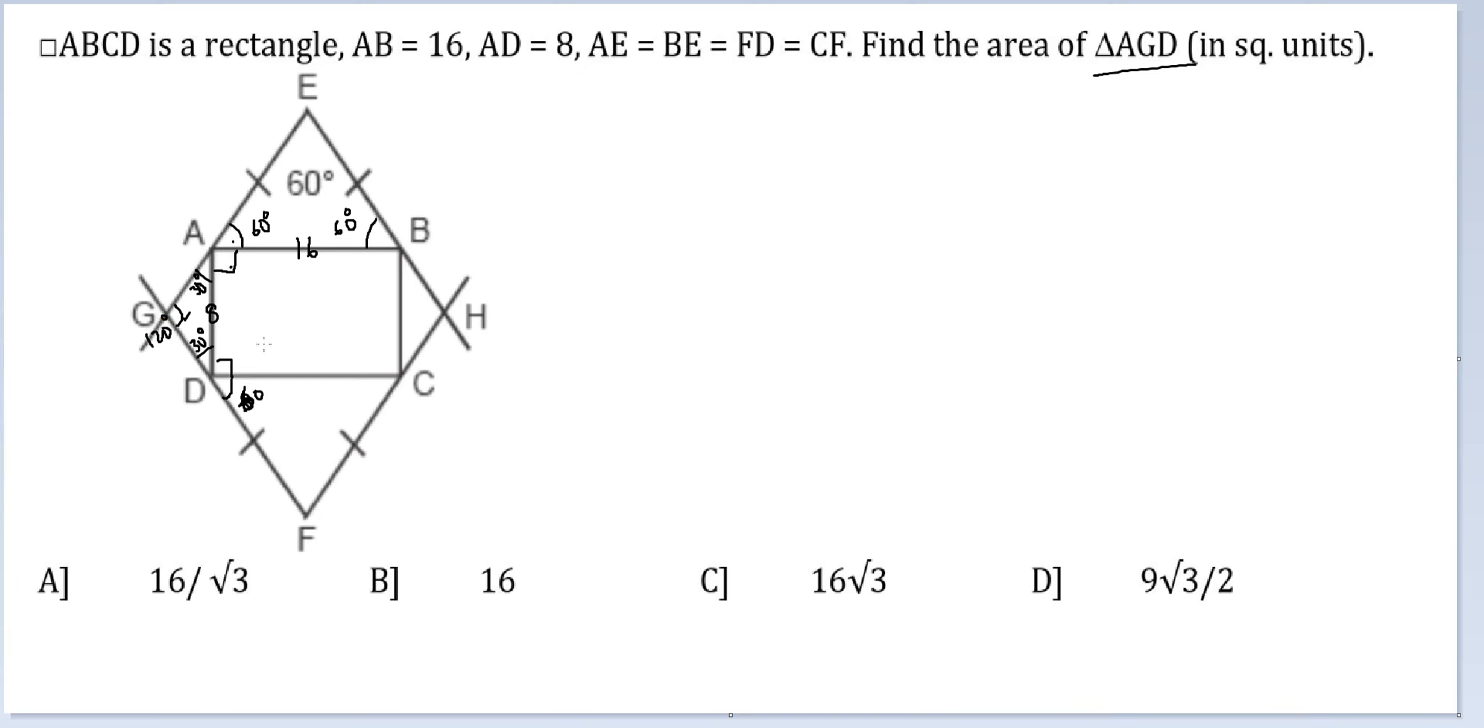For a 30-30-120 triangle the ratio of sides is 1 is to 1 is to root 3. If the side opposite 120 degrees is 8, the side here will be 8 by root 3, and 8 by root 3. We have all the sides, we have all the included angles.